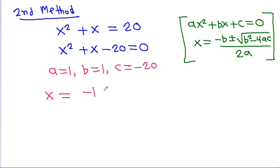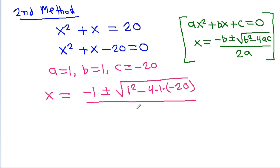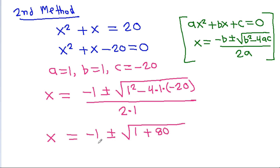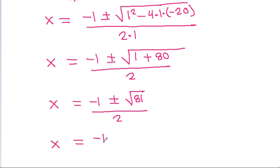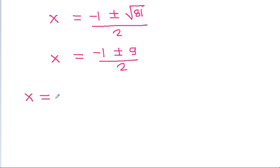So x will be equal to minus 1 plus or minus square root of 1 squared minus 4 times 1 times minus 20, divided by 2 times 1. And x is equal to minus 1 plus or minus square root of 1 plus 80, all over 2, which is minus 1 plus or minus square root of 81, over 2, giving minus 1 plus or minus 9 over 2. So x equals minus 1 plus 9 over 2, that is 8 over 2, so x is 4.